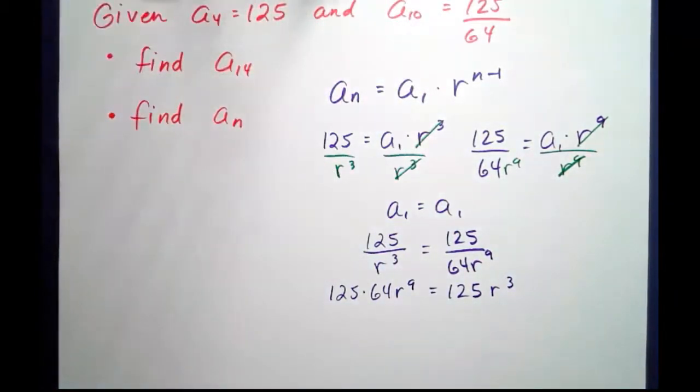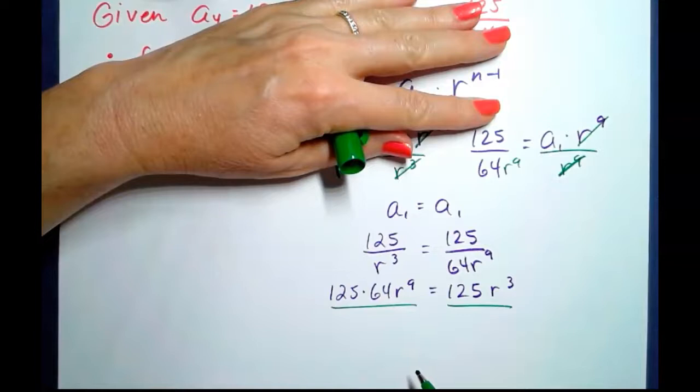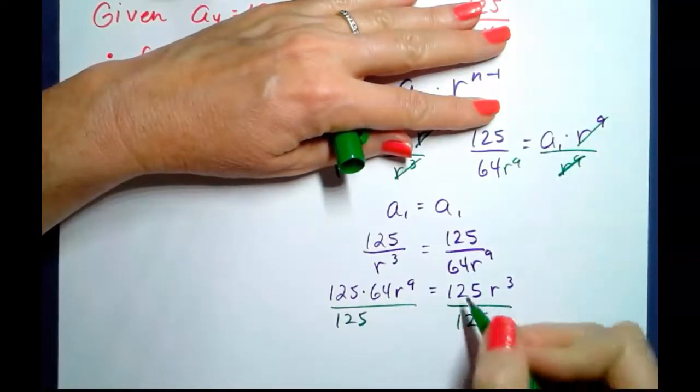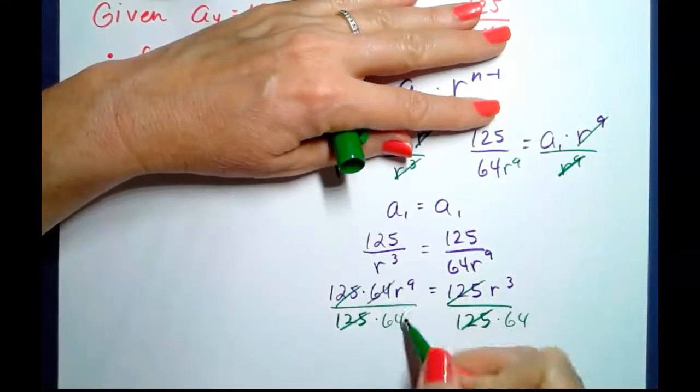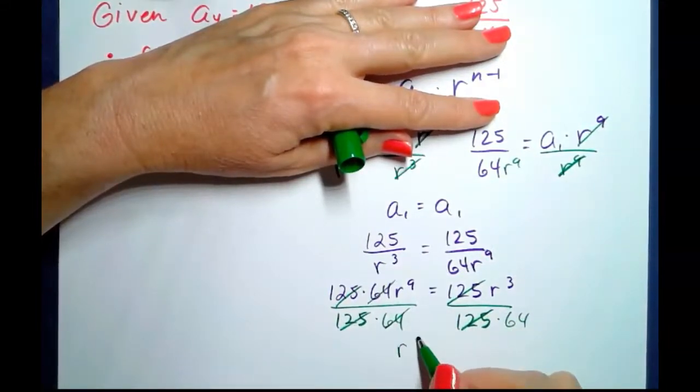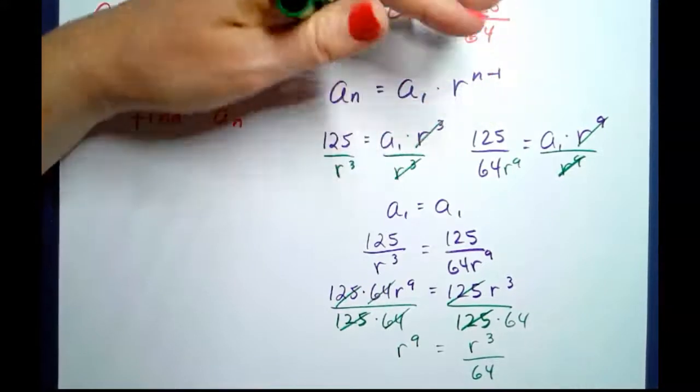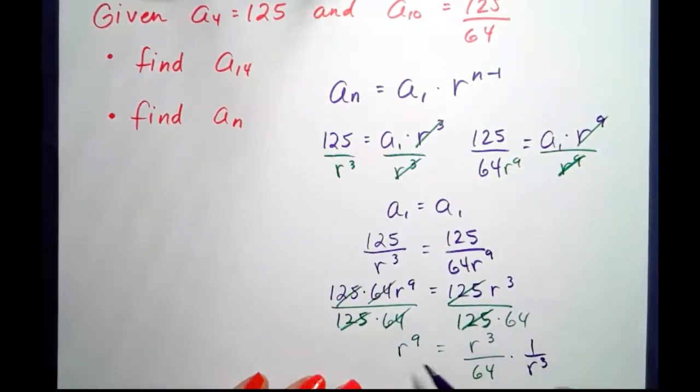Now let's start dismantling this problem. First of all, let's divide everything by 125, which cancels the 125s. And now let's divide everything by 64. So now we've got r to the ninth equals r to the third over 64. Let's keep going and isolate the r's by dividing both sides by r to the third.